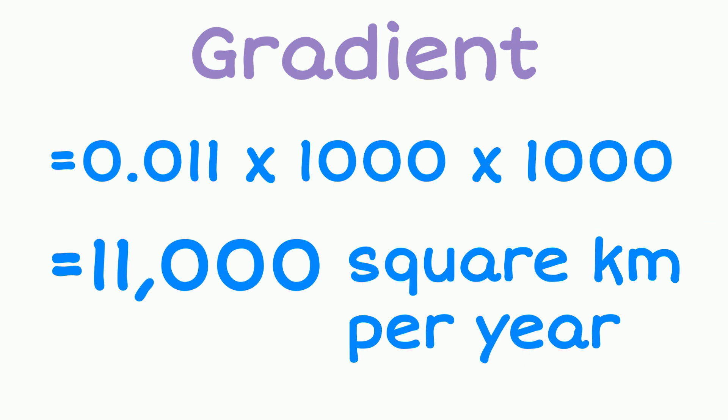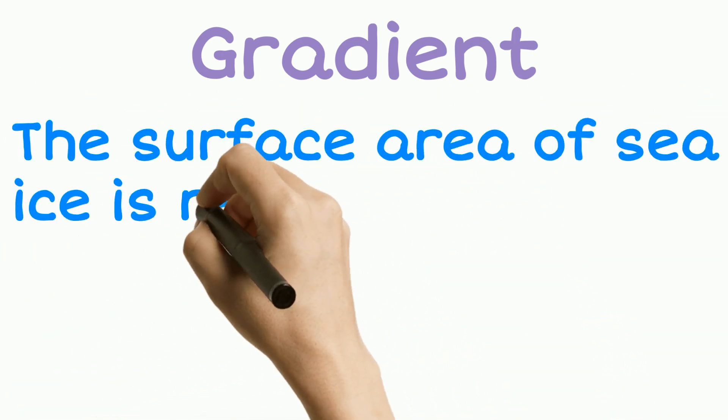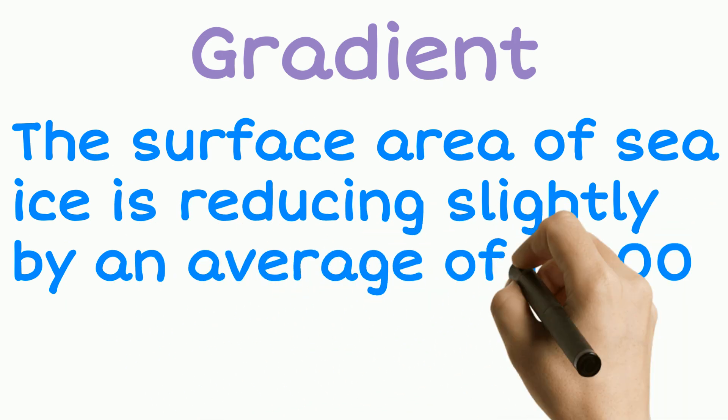So we can say that our surface area is reducing over this period of time by an average of 11,000 square kilometres per year.